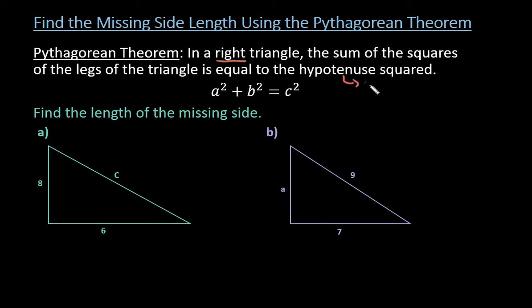Remember that the hypotenuse always is opposite of the right angle, and it's always the longest side.